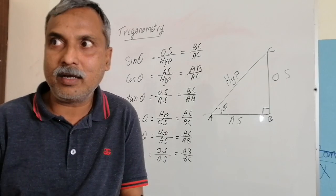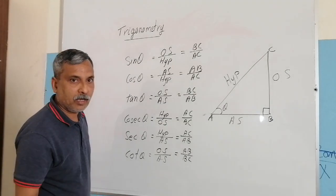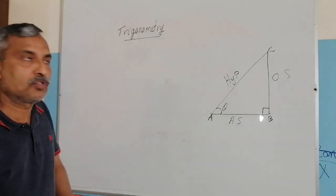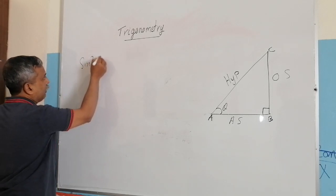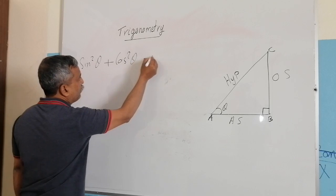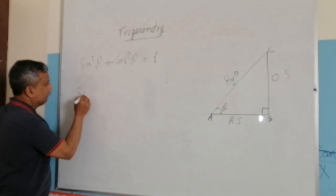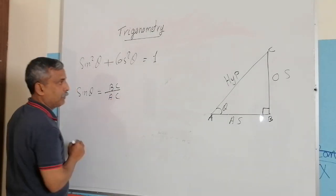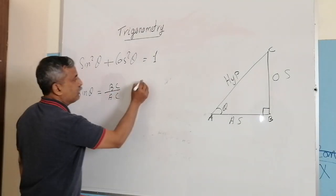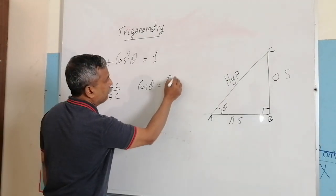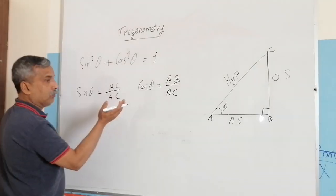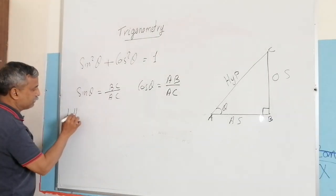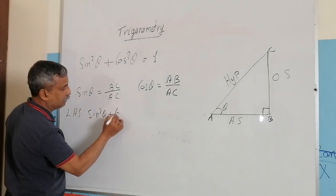Now let me try to prove the first trigonometric identity. The identity is that sine squared theta plus cosine squared theta is equal to 1. To prove an identity we begin with the left-hand side of the equation, which is sine squared theta plus cosine squared theta. In this triangle, sine theta equals BC by AC and cosine theta equals AB by AC.